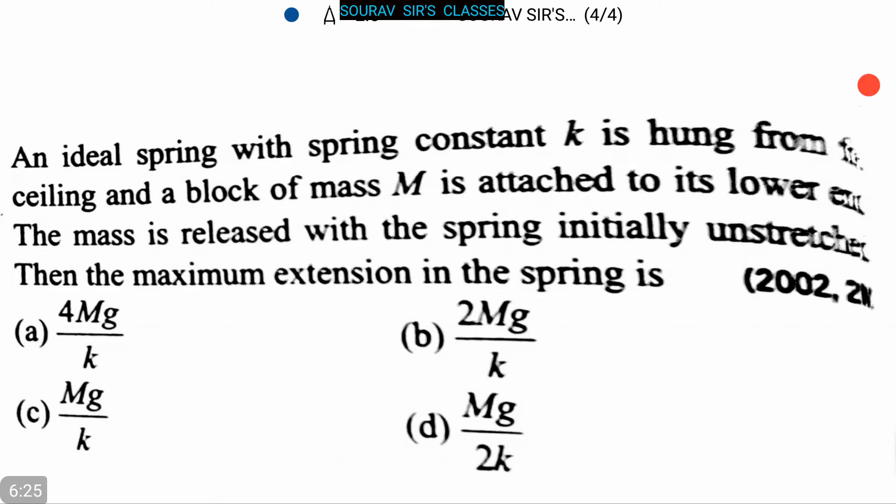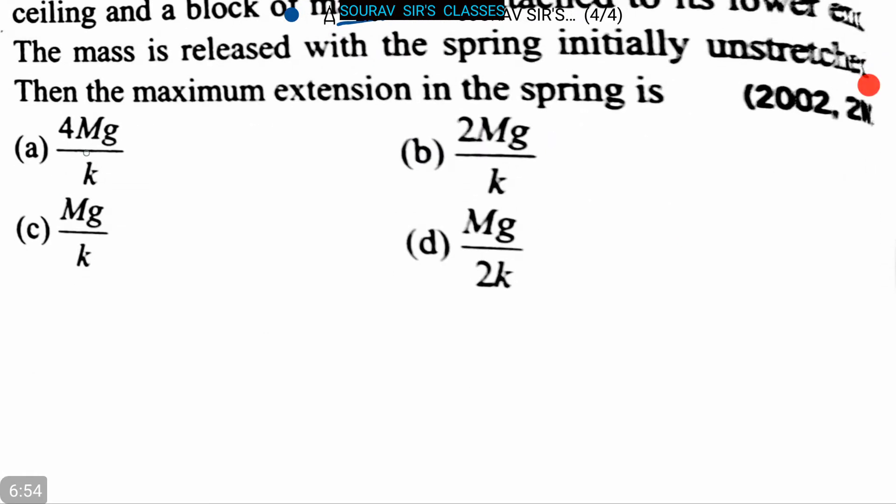Our next question is: An ideal spring with spring constant k is hung from the ceiling, and a block of mass M is attached to its lower end. The mass is released with the spring initially unstretched. Then the maximum extension in the spring is?